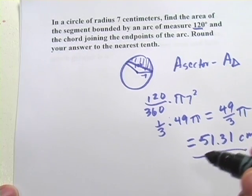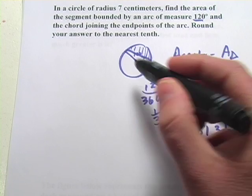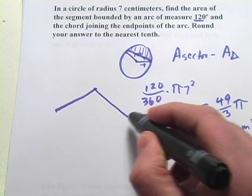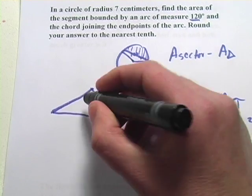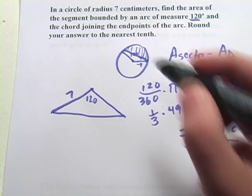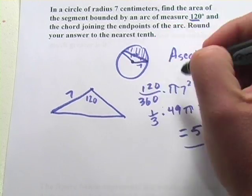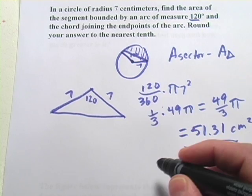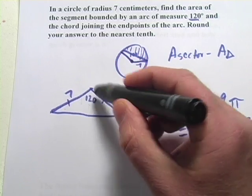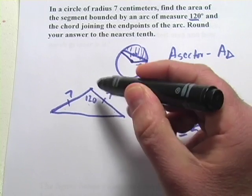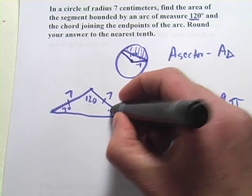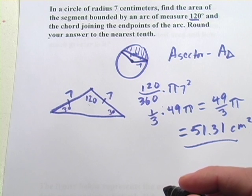Now let's work on this triangle, which is a little bit trickier. The angle inside was 120 degrees, and both sides are radii so both equal 7. We've got an isosceles triangle. Whatever's left of the 180 degrees after the 120 — that's 60 — gets split evenly, giving 30 degrees and 30 degrees for the other two angles.